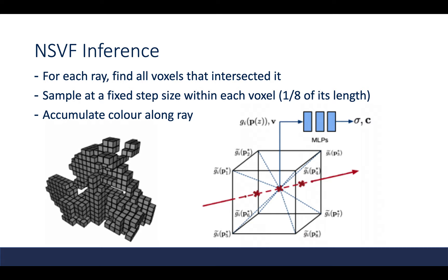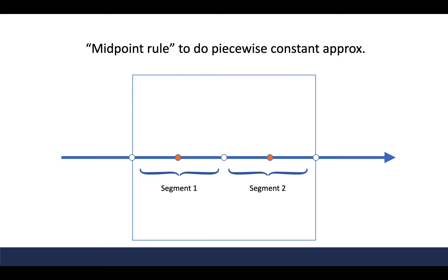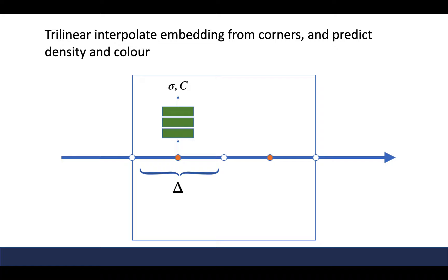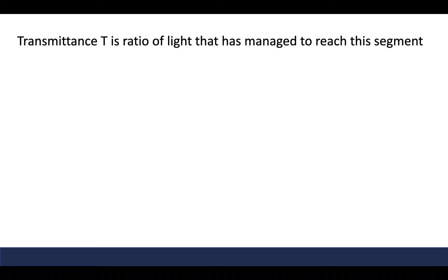To do this integration, we're going to use the midpoint rule to do a piecewise constant approximation for each segment sampled within the voxel. We evaluate our MLP at these midpoints; the input is the interpolated embeddings from the corners of the voxel, and the MLP output is the volume density sigma and the color C, while delta is the length of the segment. When using the midpoint rule, the total volume density for a segment is just the product of its length and the midpoint volume density, and we use this to define our alpha value. The higher the volume density or length, the higher the alpha value — which is like how much light gets blocked.